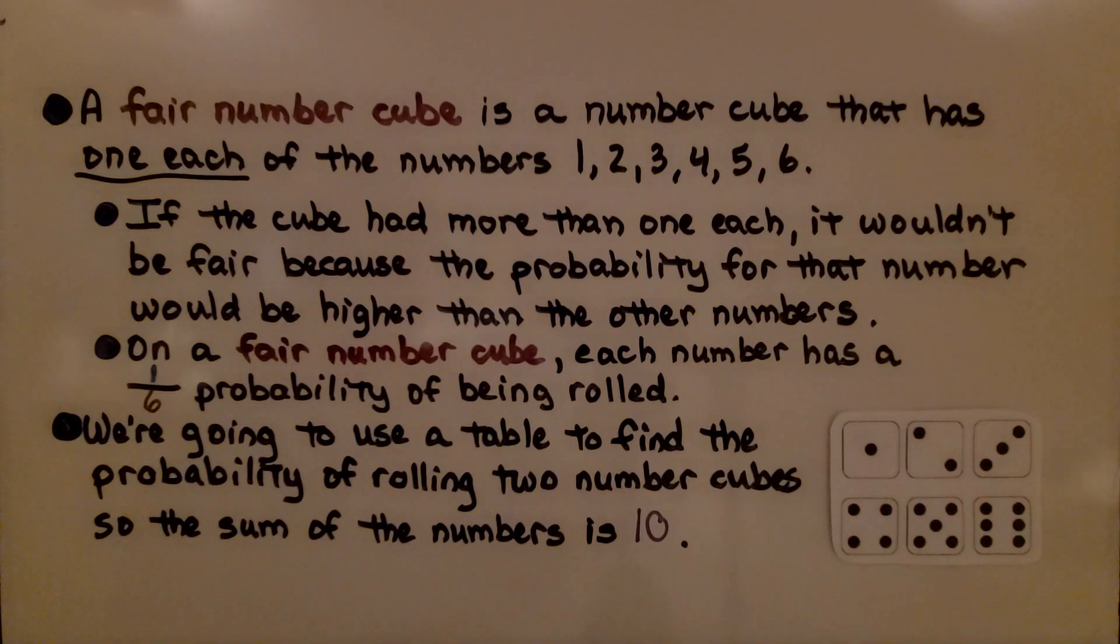On a fair number cube, each number has a 1 sixth probability of being rolled. We're going to use a table to find the probability of rolling two number cubes so the sum of the numbers is 10. The two number cubes would be a compound event that consists of two simple events.